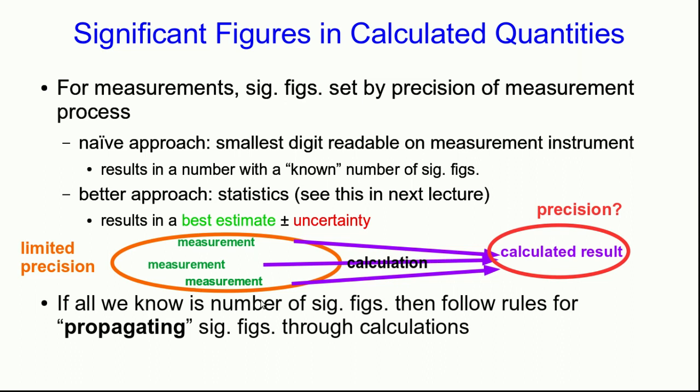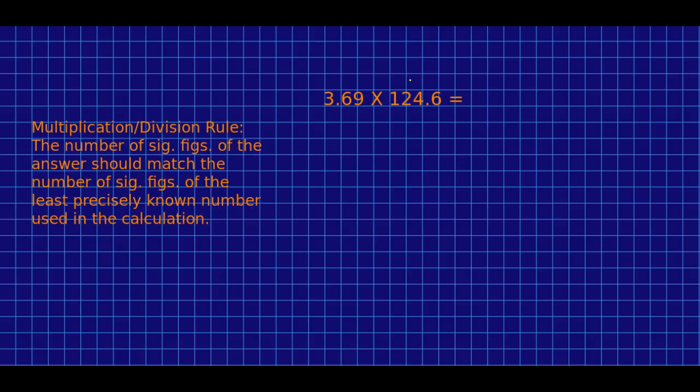This is called propagating the significant figures through the calculation. You've likely seen the rules for propagation of sig figs in some other course, but I find many students are a little confused by them. So let's just go over them.